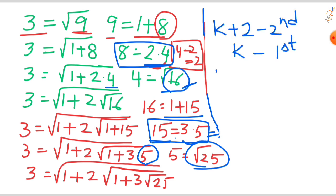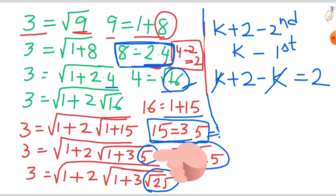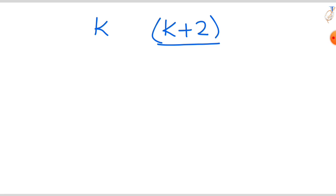Because when you do the difference, k plus 2 minus k, you will get only 2. So here the difference should be 2. That's why you take k and k plus 2 as factors. And here the end of the term you are always making as a perfect square. So write this end term as a perfect square.